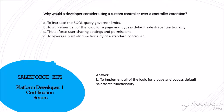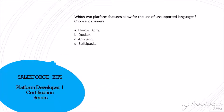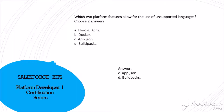Which two platform features allow the use of unsupported languages? This is a straightforward question — the answer is App JSON and Buildpacks.